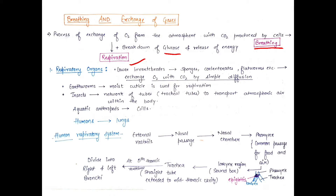For the processes of breathing and respiration, there are some specialized respiratory organs present in organisms. In lower organisms like sponges, cnidarians, and flatworms, oxygen and CO2 exchange occurs through simple diffusion. In earthworms, this diffusion exchange is through moist cuticles. In insects, there are specialized tracheal tubes present in a network throughout the body.